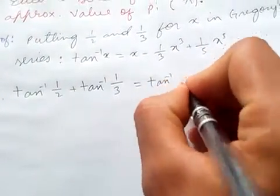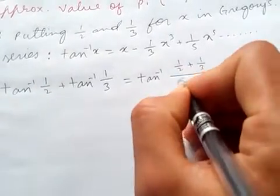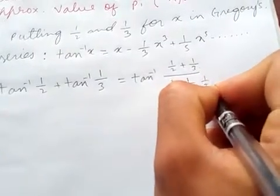So it is tan inverse of 1 over 2 plus 1 over 3, divided by 1 minus 1 over 2 times 1 over 3.